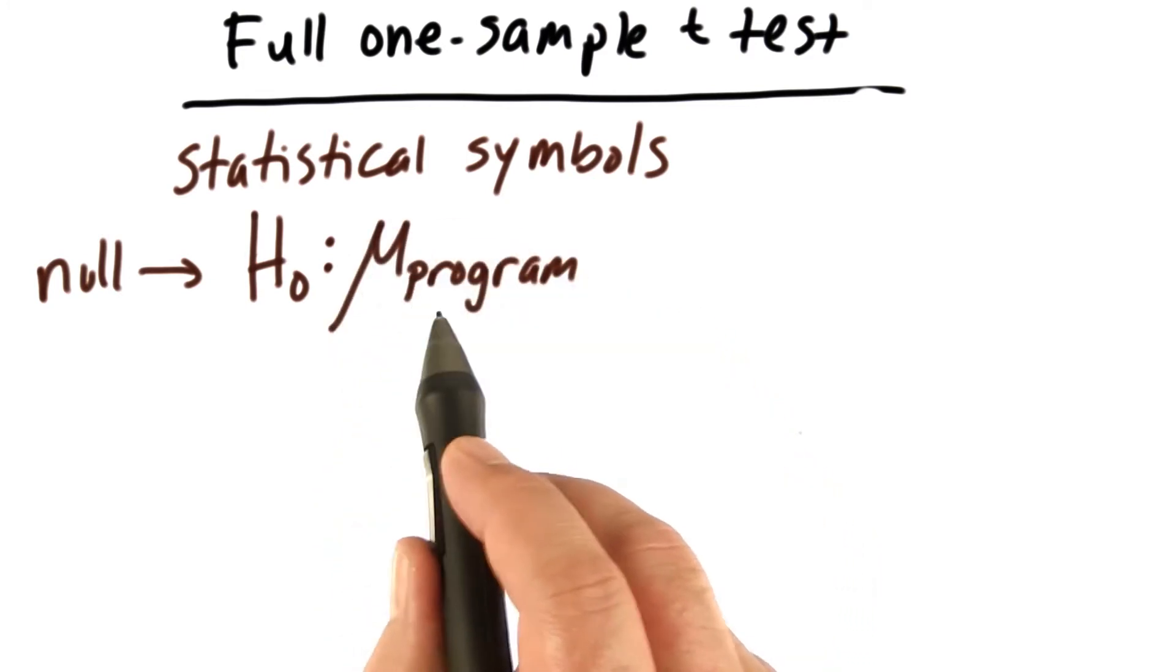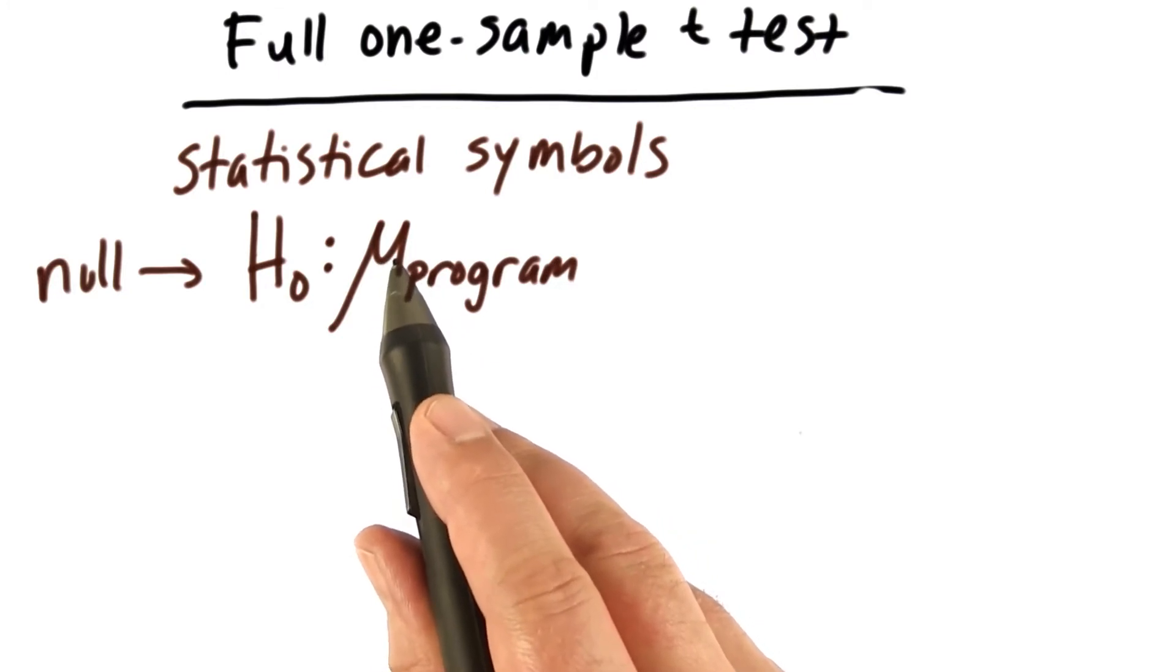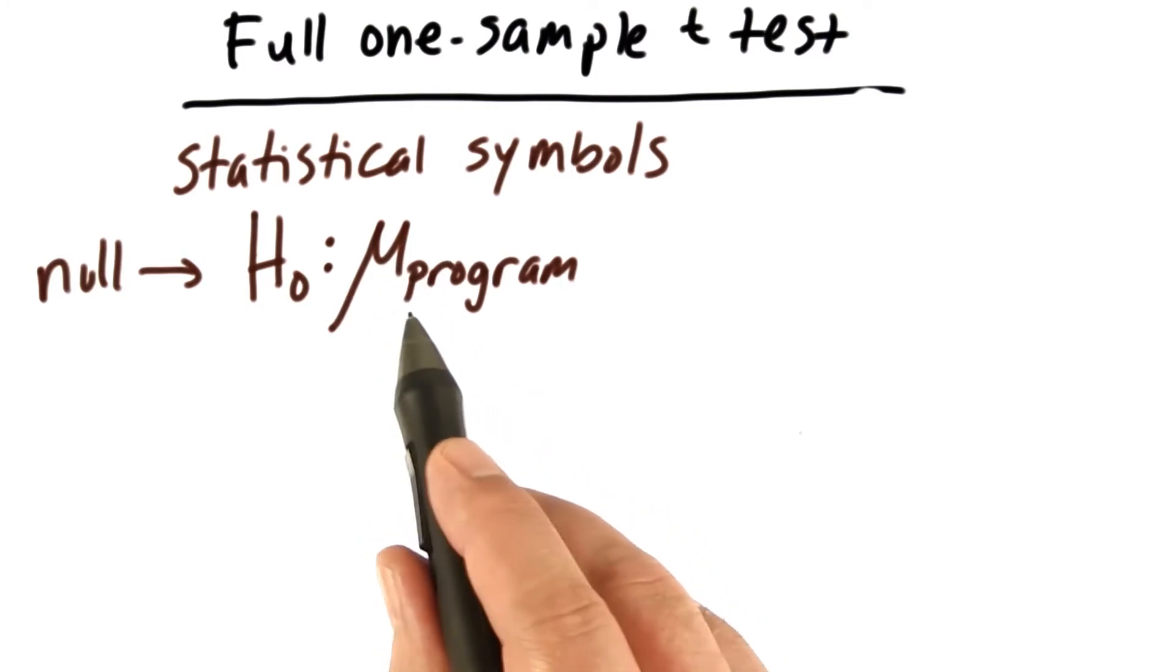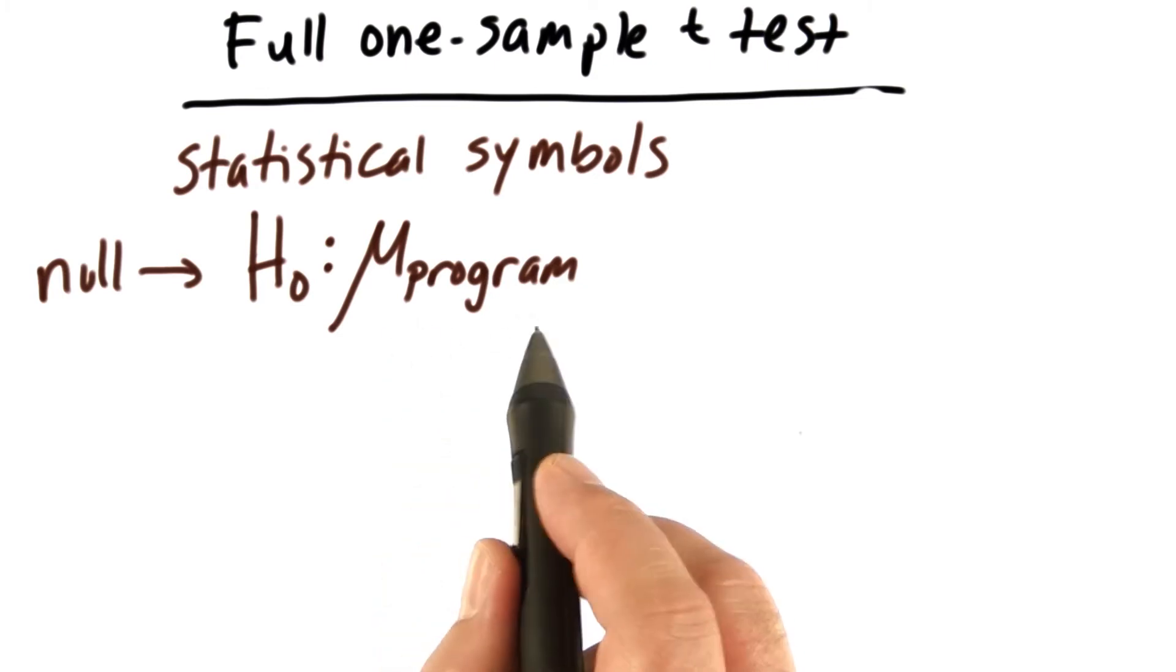We use mu subscript program to indicate what the average amount spent per week on food would be if we could implement this whole program throughout the entire co-op.